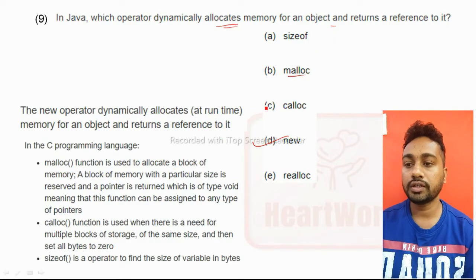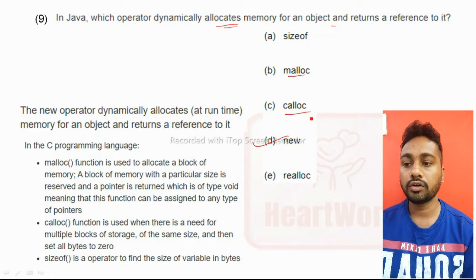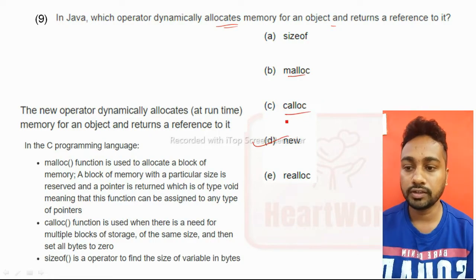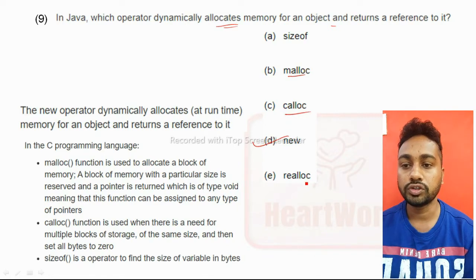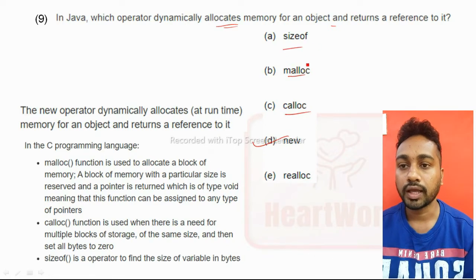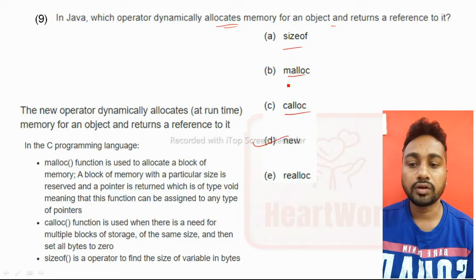malloc function is used to allocate a block of memory. calloc function is used when there is a need for multiple blocks of storage of the same size and then set all bytes to zero. sizeof is an operator to find size of variable in bytes. So here new is the right answer, option D.